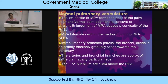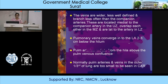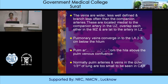The veins are wider, less well defined, and branch less often than companion arteries. They are located medial to the companion artery in the upper zone, overlap the companion artery in the middle zone, and are lateral to the artery in the lower zone. Pulmonary veins converge into the LA 2 to 3 cm below the hilum. Pulmonary arteries radiate from the hilum above the pulmonary venous confluence. Normally, pulmonary arteries and veins in the outer one third of the lung are too small to be seen on chest X-ray — if you visualize them, something is abnormal.